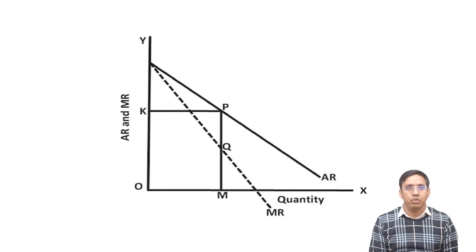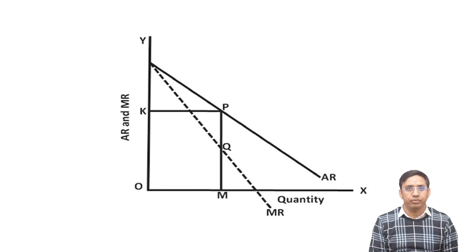Now, with the help of one schedule, we will see the computation of marginal revenue for a given average revenue. The following chart indicates the relationship between average revenue and marginal revenue. The first column indicates the price of the market, the second column indicates the quantity demanded, the third column indicates the total revenue, and the fourth column indicates the marginal revenue. In the monopolistic firm, when the firm is decreasing its price, quantity demanded increases with an increase in total revenue. The marginal revenue is the difference in revenue from the extra unit sold — that is, how much revenue a firm generates by selling one extra unit.